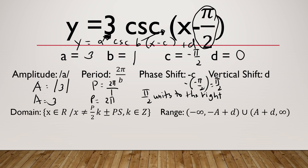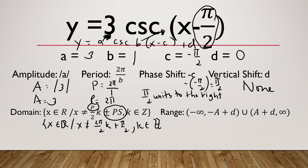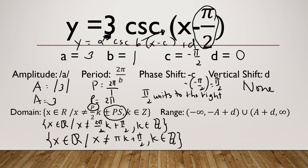For vertical shift, since d is equal to 0, it implies that vertical shift is none — there is no movement upward or downward of the graph. For domain, we substitute the value of p and the phase shift. It will be x is an element of real numbers such that x is not equal to 2 pi over 2k plus pi over 2, where k is an element of integers. Simplifying 2 pi divided by 2, the domain becomes x is an element of real numbers such that x is not equal to pi k plus pi over 2, where k is an element of integers.